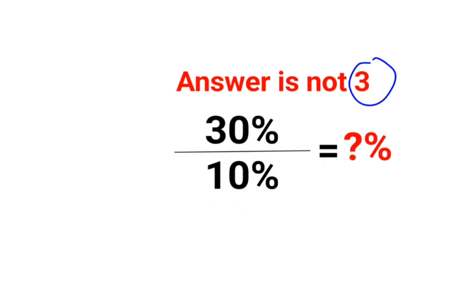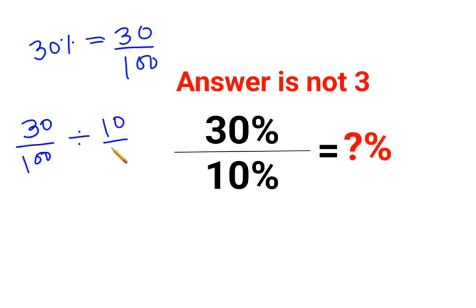See, whenever you have a percentage sign ahead of a number, you can convert it into a fraction by dividing that number by 100. So technically the question is 30 upon 100 divided by 10 upon 100.